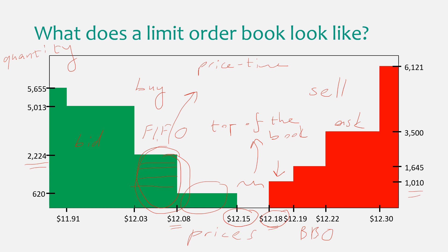There are other execution protocols as well. For example, price-size priority encourages people to submit large orders, because in this regime when you have multiple limit orders at the same price, the largest one is executed first. We should think of each limit order as a price-quantity pair — when you submit a limit order you must specify both a price and a quantity.